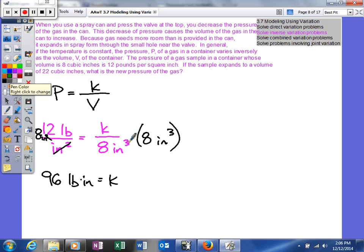Alright, so we know what k is. So now we're going to do is we're going to see if we can't use that k to help us predict in the future. Alright, so over here we're going to say P is equal to 96, and it's going to be pound inches, over V.